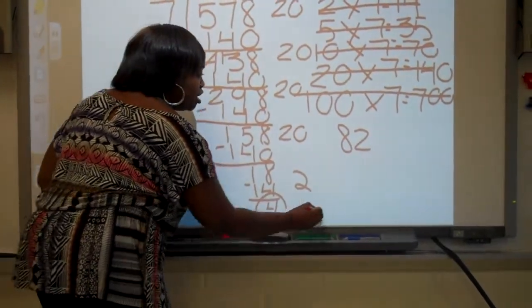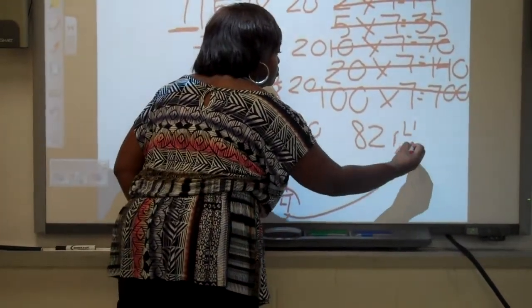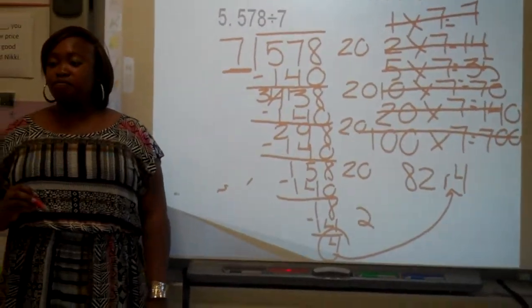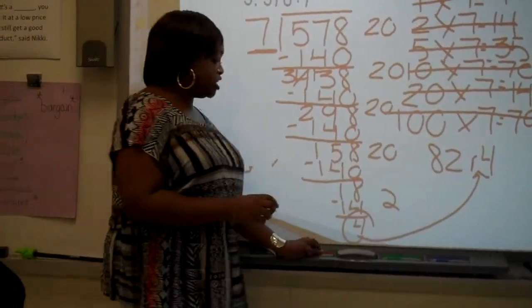82, but don't forget this 4! 82 remainder 4! Very good. Raise your hand if you have 82 remainder 4. Very good job. Alright, clear your nest of everything.